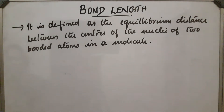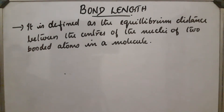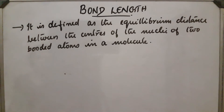Bond length can be measured in different ways: X-ray diffraction method, spectroscopic method, and electron diffraction method. All these methods can be used to find the bond length.